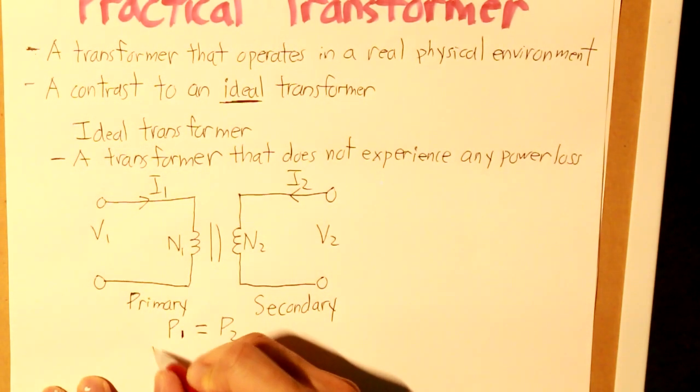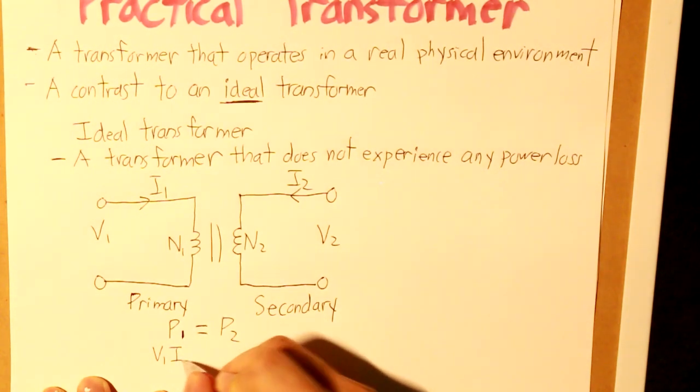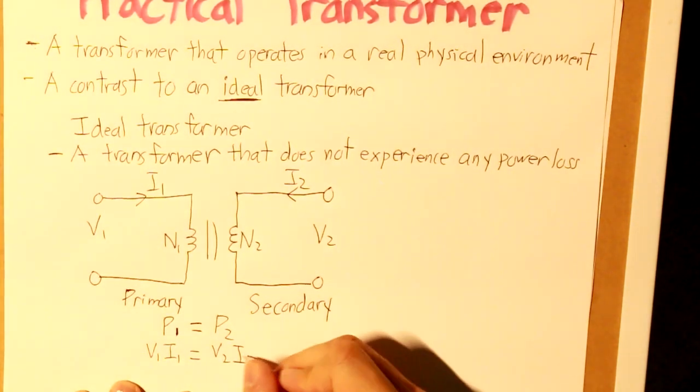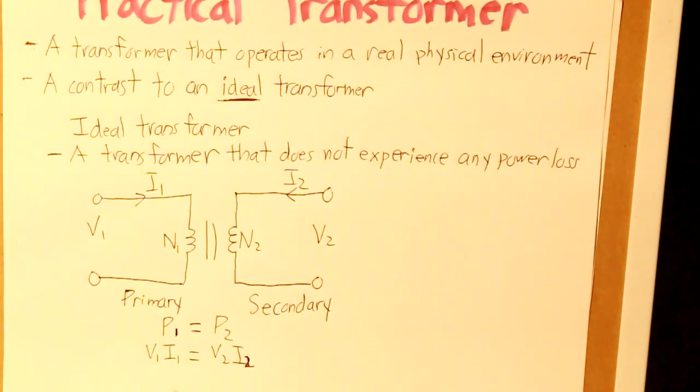And also, we have to write down this equation. Because, as we know, a transformer amplifies the voltage and the current, but the power equals the same. So that's why we have V1 I1 is equal to V2 I2.